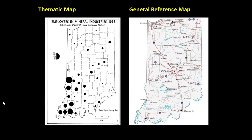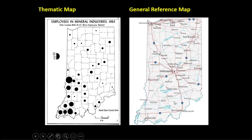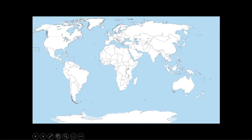To differentiate a thematic map: it has data. The map on the left shows employees in mineral industries by county, with circles showing quantity — clearly concentrated in a particular area of the state. This is a map with a theme and data. A general reference map, by contrast, is purely for reference — like a political map — and doesn't have a specific data theme.